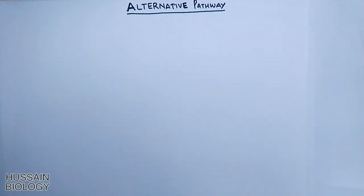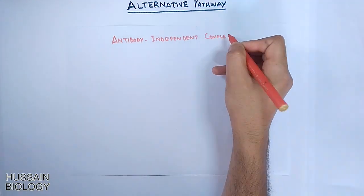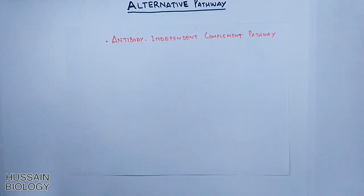The alternative pathway of complement system is the antibody-independent complement pathway where we do not need any antigen-antibody complex to drive the complement cascade, as you saw in the classical pathway. Here in this pathway...